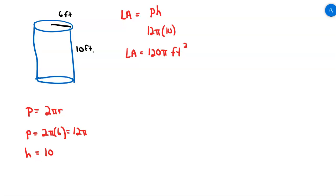If I wanted an approximation, I could grab a calculator and figure out what 120 pi equals. 120 times pi gives me 376.99. I would use the exact value when calculating total surface area because if my approximation is off, I'm going to carry that error into the next step.